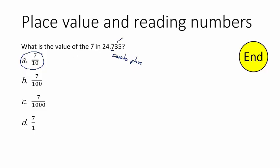Just to reiterate this: if that's the hundredths place, then that would be equivalent to 3 one-hundredths. And if this was the thousandths place, that's equivalent to 5 one-thousandths. But that's just knowing that fact. The choice is A.